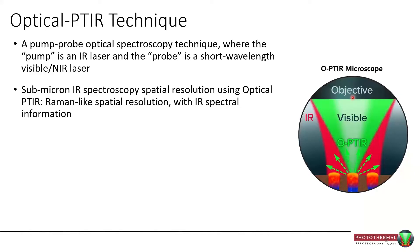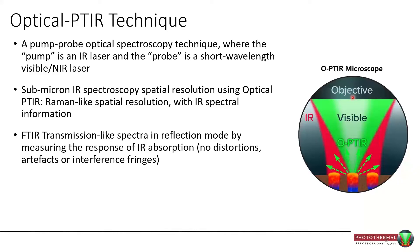With OPTIR, we're generating submicron infrared spatial resolution — it's in fact very much Raman-like, but it's full of the richness of the infrared part of the spectrum. The spectra that we collect — we typically work in reflection mode, although we can work in transmission, but reflection is the primary mode — and even in reflection, the spectra generated are very much FTIR transmission-like.